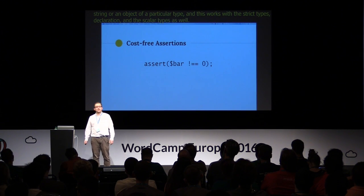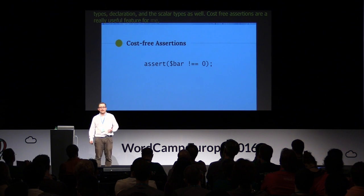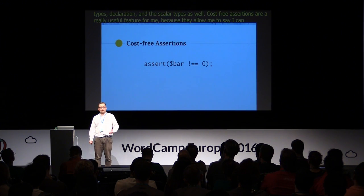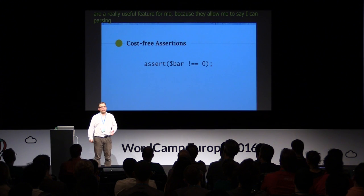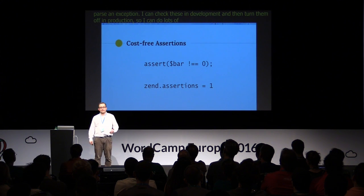Cost-free assertions are a really useful feature for me because they allow me to pass an expression that evaluates to true or false, and if it evaluates to false, it throws an exception. What's really useful about this is I can check these in development and then turn them off in production. So I can do lots of expensive checks, and then in production it doesn't have any impact on the runtime.